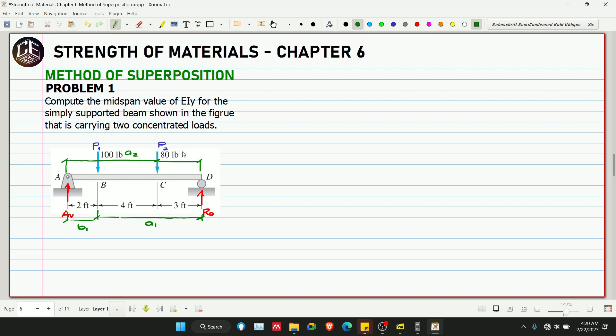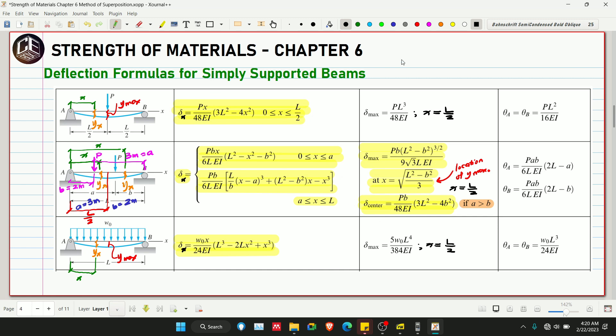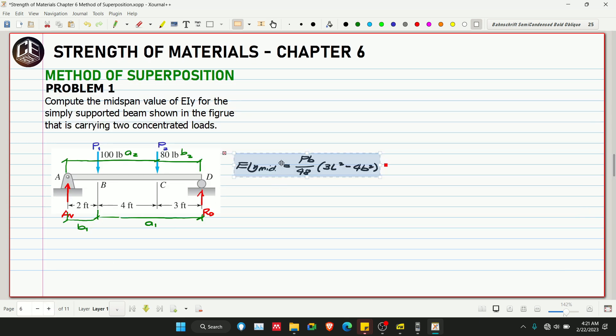Let's copy our equation here. The question asks for mid-span deflection, and it says EIy. So what we'll do with the flexural rigidity EI is move it to the other side. Our equation for deflection at mid-span is EIy equals Pb over 48 multiplied by 3L squared minus 4b squared.